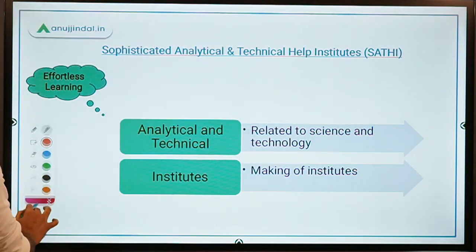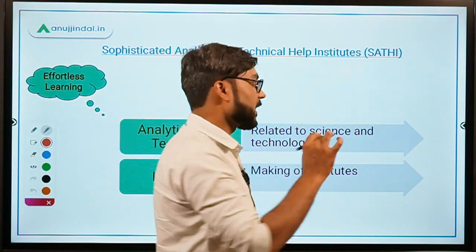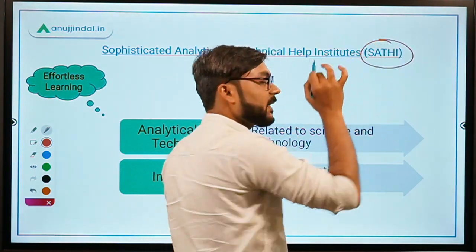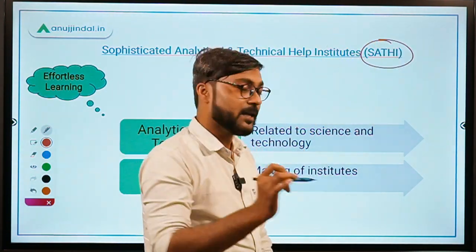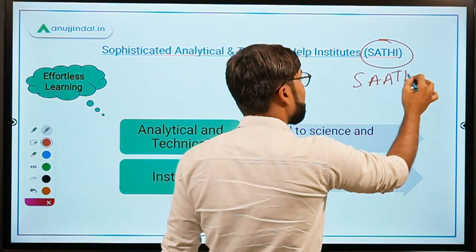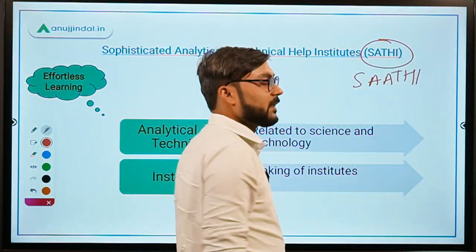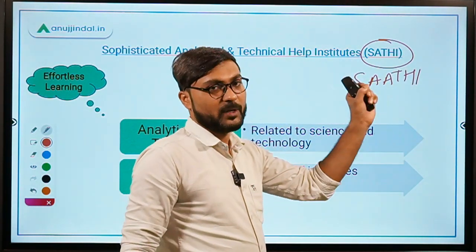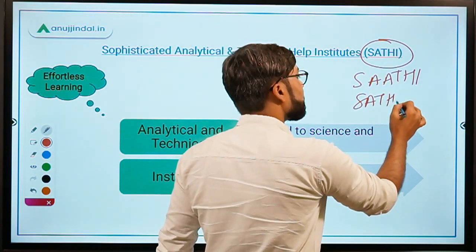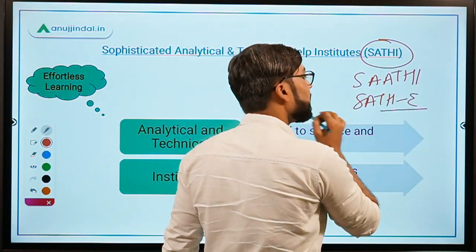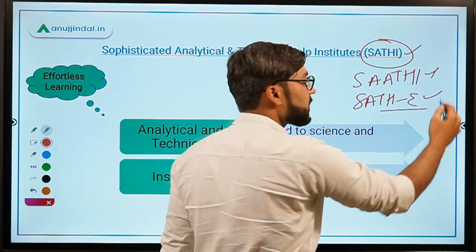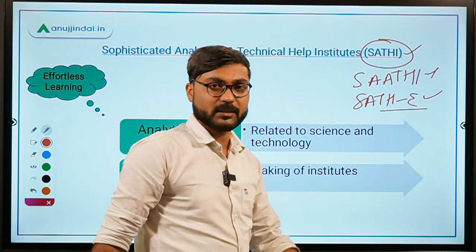The three SATHIs we are going to discuss are: first, S-A-T-H-I; second, S-A-A-T-H-I; and third, another S-A-A-T-H-I with a slight variation. These are the three SATHIs we will cover today.